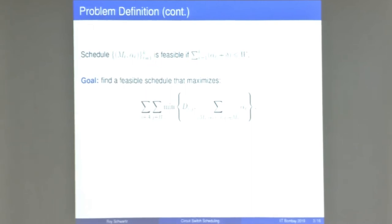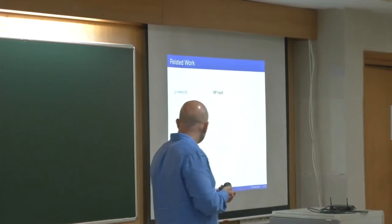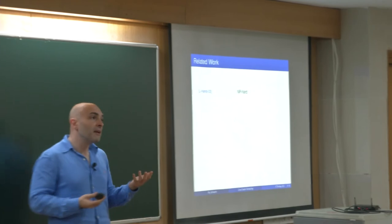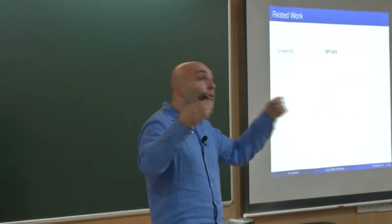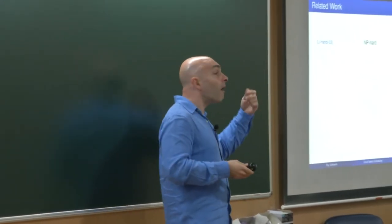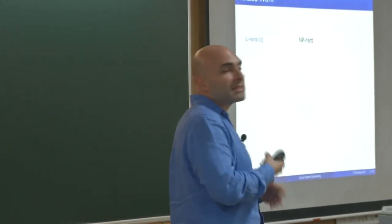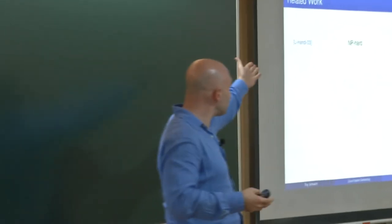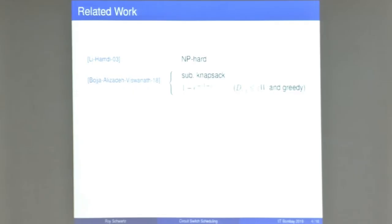One interesting point is that this objective function, viewed as a set function over configurations, is actually a monotone submodular function. As for what is known: Li and Hamdi proved this problem is NP-hard. They proved that minimizing the total time needed to satisfy all demands is NP-hard, and this immediately implies our maximization problem is also NP-hard.